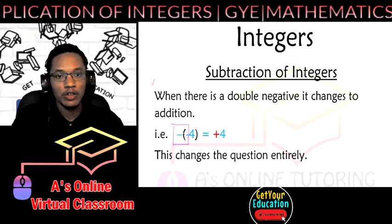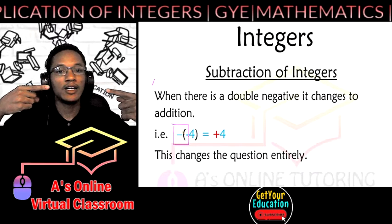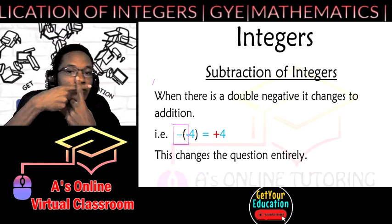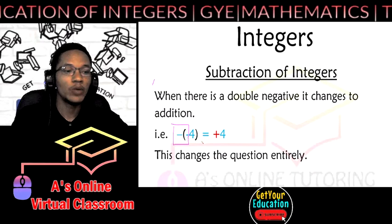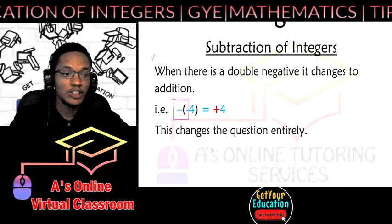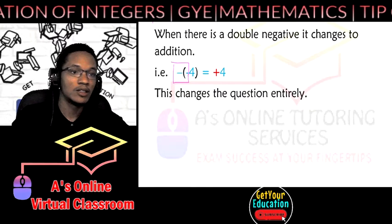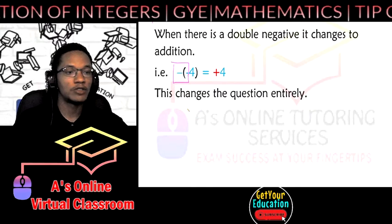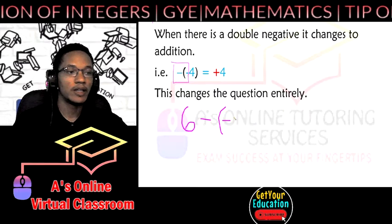So when you have a negative and a negative clashing like that, it changes to a positive. So the negative four is no longer take away negative four, it is plus four. So this changes the question entirely. Let's say we have 6 - (-2).